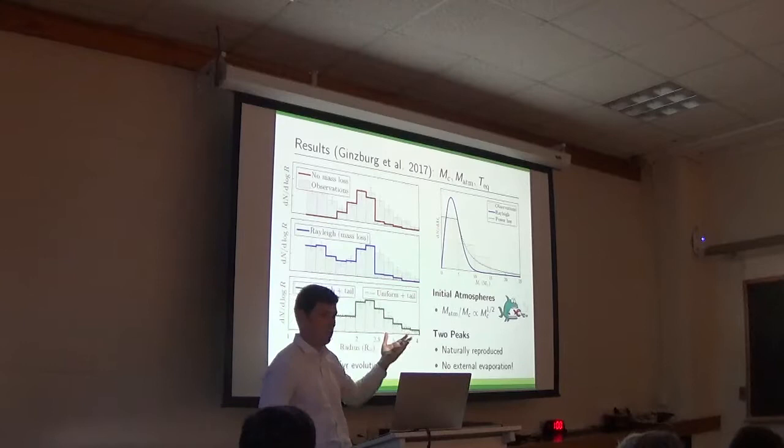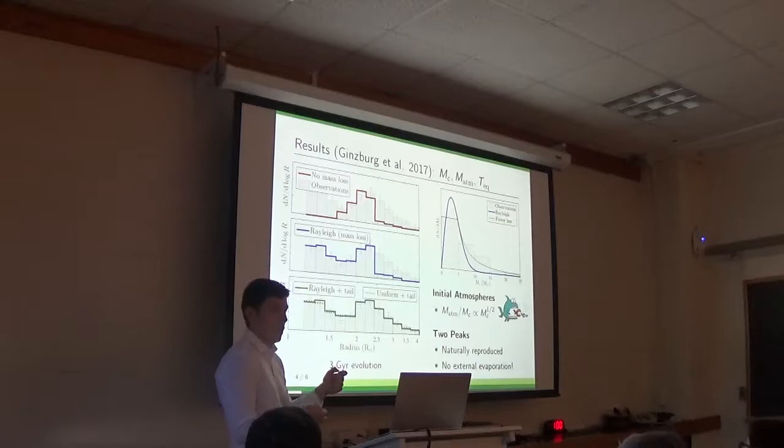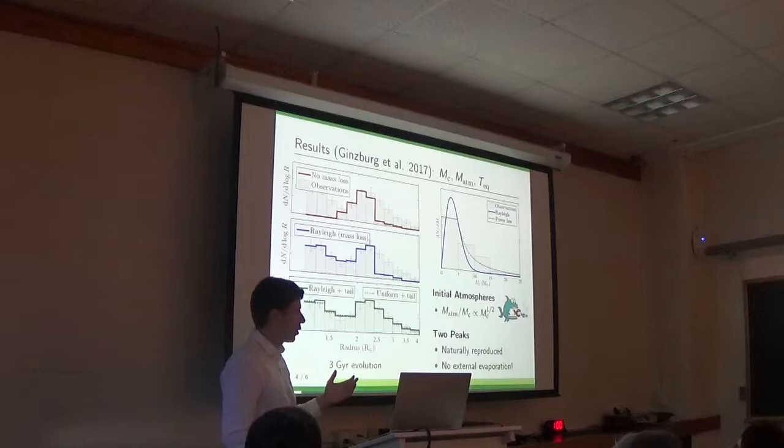So the gray histogram is the observations. This is the same one that we had on the first time. So first, let's look at the top red model. This is when we allow the planets to cool, but we shut off artificially the mass loss. So they keep the mass. And we see that we can reproduce only the right peak, because atmospheres keep their mass.